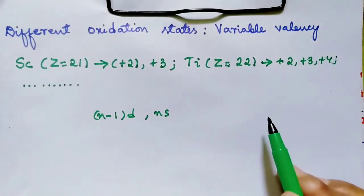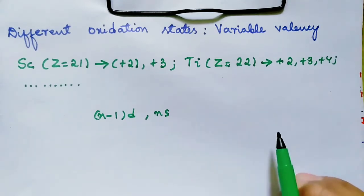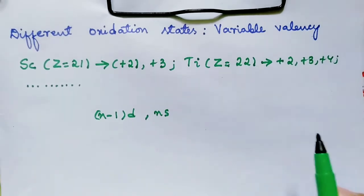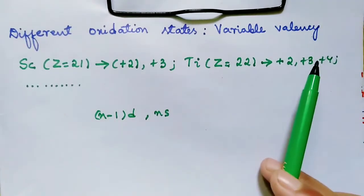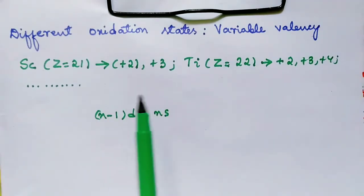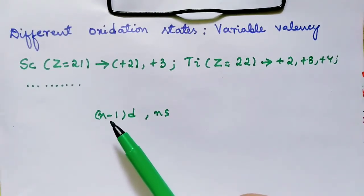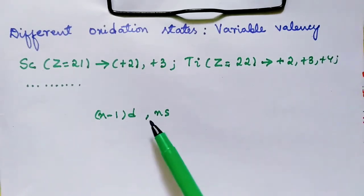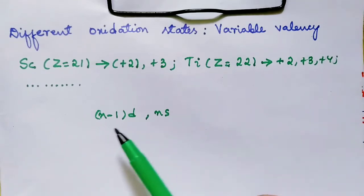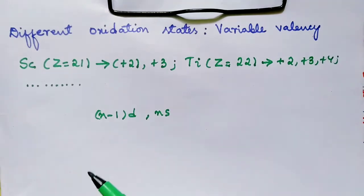In today's video, I'm going to explain about the different oxidation states or the variable valency of the D-block elements. What is the reason that makes some of the D-block elements show variable valency? In D-block elements, we have (n-1)d orbital and the ns orbital, and the energies of these two are fairly close to each other. Hence, the (n-1)d electrons are as easily lost as the ns electrons.